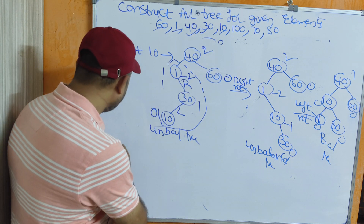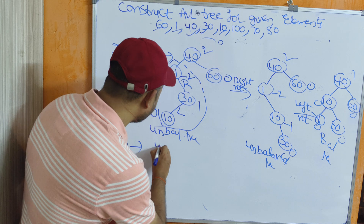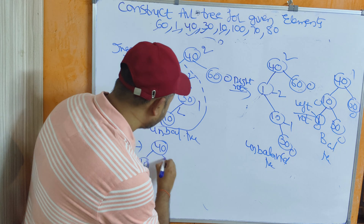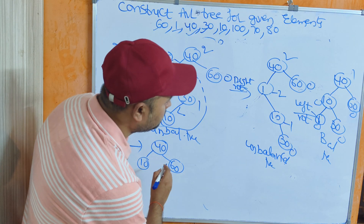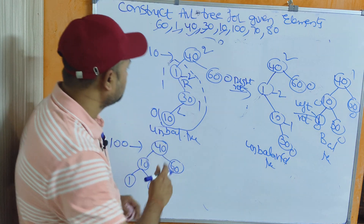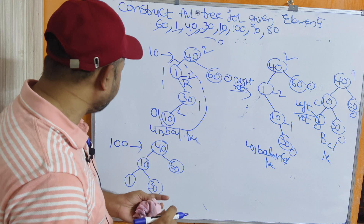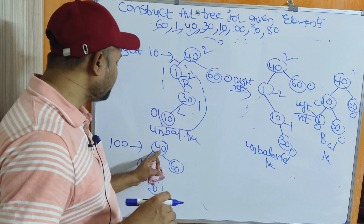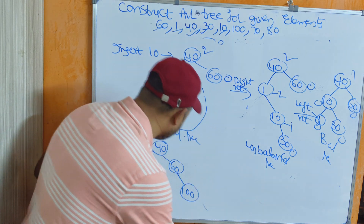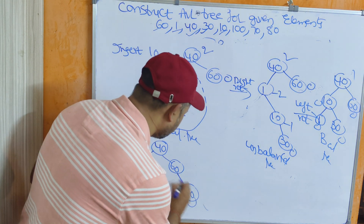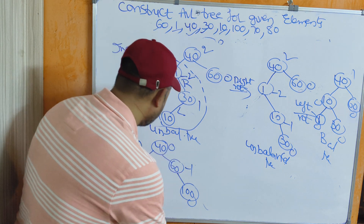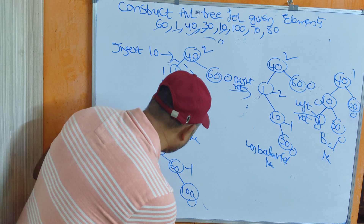Insert 100. The previous tree is 40 (root), with children 10 and 60; 10's children are 1 and 30. 100 is greater than 40, go right. 100 is greater than 60, so 100 becomes 60's right child. Calculate the balance factor — all nodes have balance factors of 0, -1, or 1. This is a balanced tree.